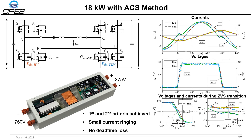With the proposed ACS method, sync ZVS transition is achieved. Simulation and experimental results at 18 kW show that since current IHV is positive and ILV is negative, the first criteria is achieved and both sides ZVS start at the same time. Due to the ACS method, the second criteria ensures both sides ZVS transition end at the same time. As a result, current ringing is smaller and no dead time loss is generated.